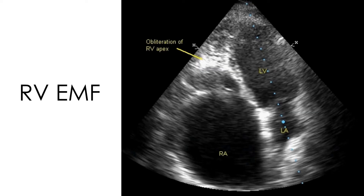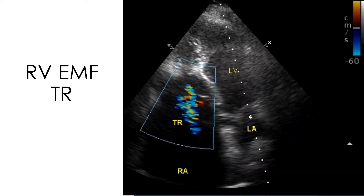Still frame of apical four chamber view in RV EMF showing the obliteration of the RV apex and grossly dilated right atrium. Another still frame in RV EMF showing the tricuspid regurgitation jet by color Doppler imaging.